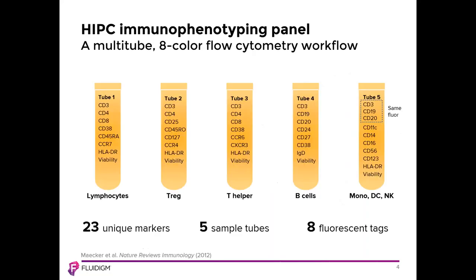Shown here is a typical way that immune profiling and monitoring is performed — a five-tube panel used by the Human Immunology Project Consortium, or HIP-C. While the HIP-C and other flow cytometric assays for immunophenotyping cover a number of markers, they require multiple tubes to do so. Certain antibodies must be used multiple times across tubes in order to allow for deeper phenotyping of certain cell subsets. Correlative data for markers not repeated is thus lost, and the number of populations that can be identified is therefore reduced.